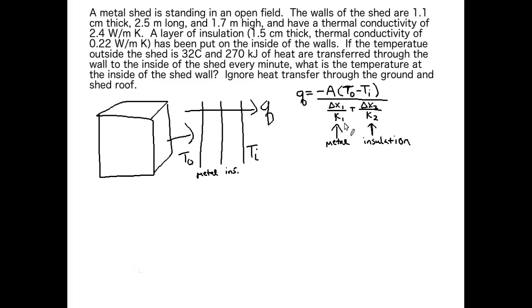If we had another layer on the wall we'd just add another term to the denominator and say plus Δx₃ over k₃. If we had a fourth layer we'd add in a fourth term and so on for however many layers of wall we have. This time we have two, so we need just two terms in our denominator.